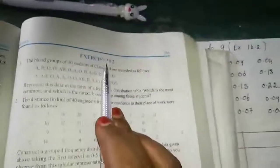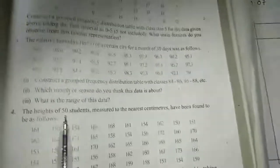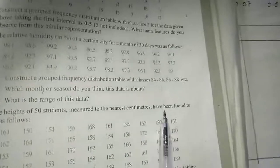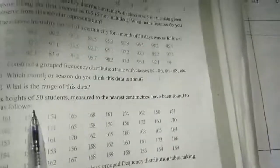Hi dears, in last class we completed exercise 14.2, sums 1, 2, 3. Now the fourth sum: the heights of 50 students measured to the nearest centimeter have been found to be as follows.